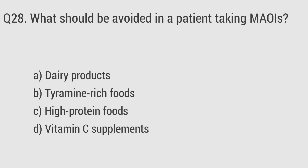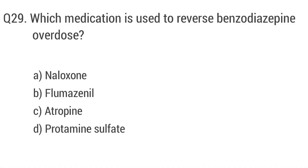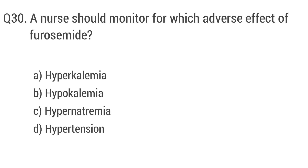Question 28: What should be avoided in a patient taking MAOIs? The right answer is option B: Tyramine-rich foods. Question 29: Which medication is used to reverse benzodiazepine overdose? The right answer is option B: Flumazenil. Question 30: A nurse should monitor for which adverse effect of furosemide? The right answer is option B: Hypokalemia.